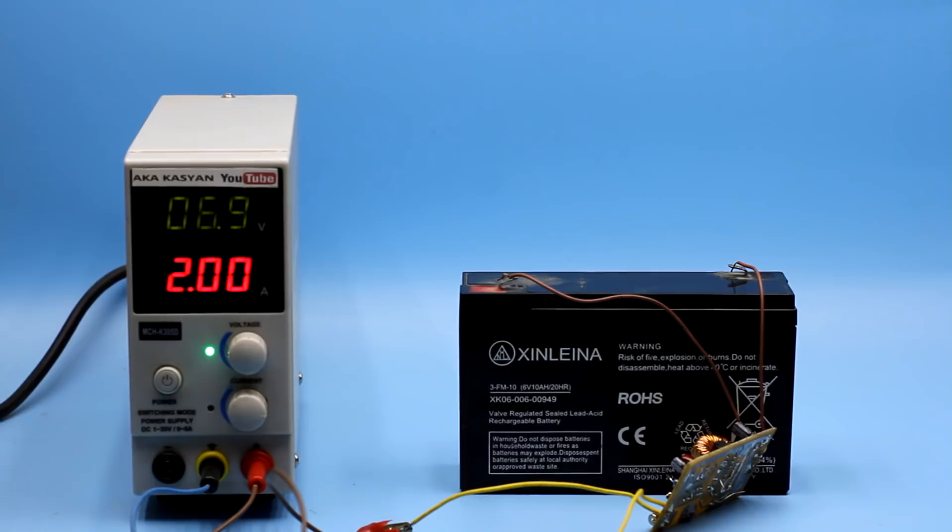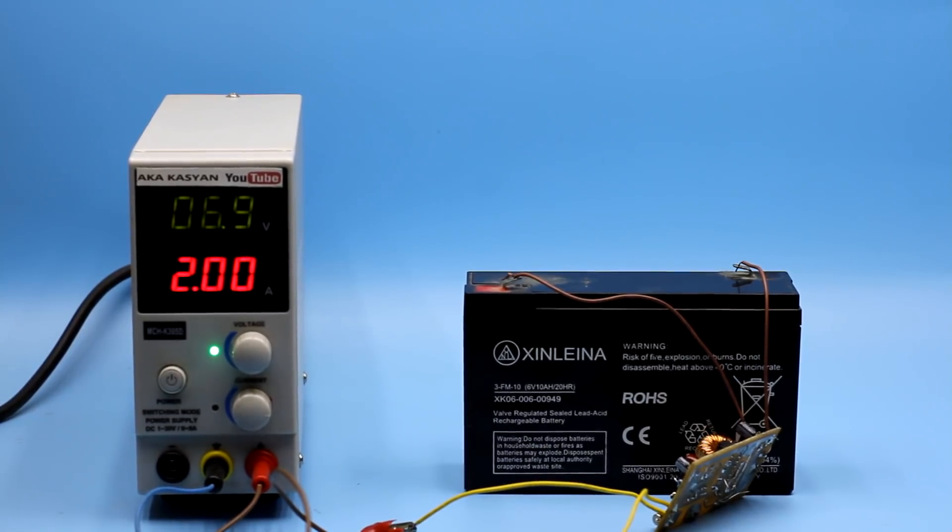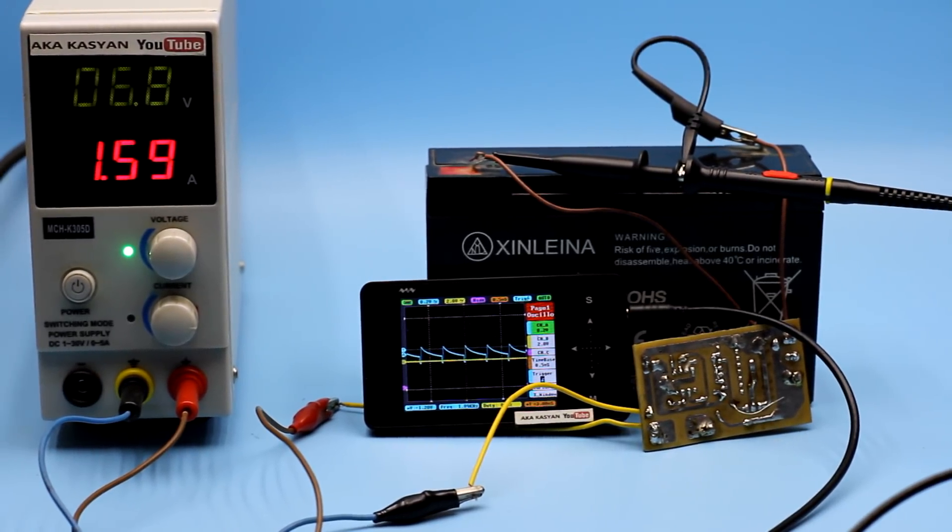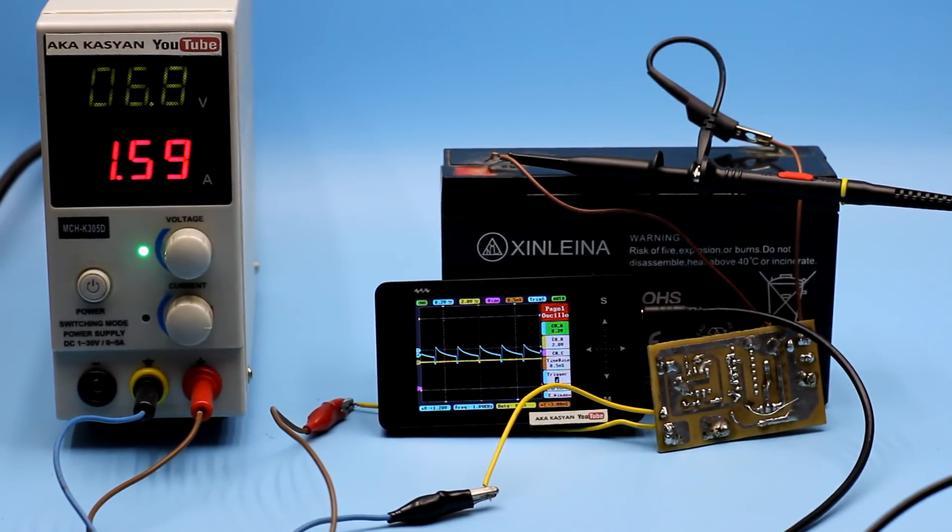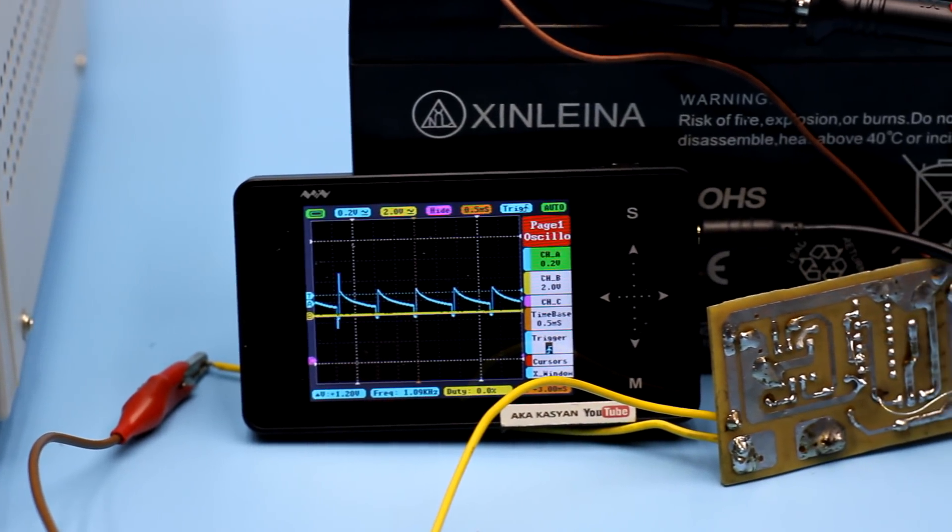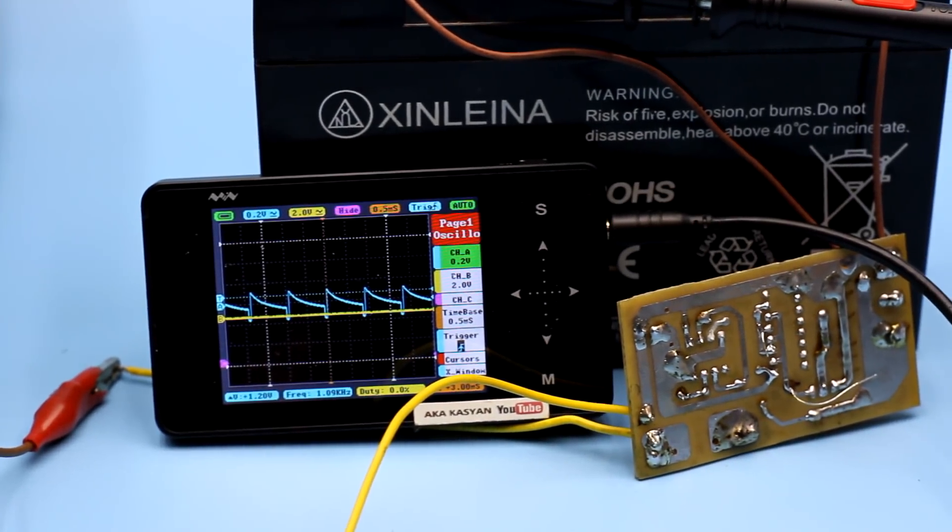On the charger you need to set the current no more than 2A, otherwise the fuse on the disulfator board will burn out. Someone will say, 2A of charging current isn't enough. Yes, I agree. But don't forget that our goal isn't charging but disulfation.